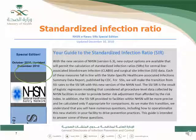The standardized infection ratio is a relatively recent approach to looking at surveillance data. It was introduced at the end of 2010, so it first started in 2011–2012. Initially it was used for SSI, and later extended to other types of infection including CLABSI, VAP, CAUTI, and so on.